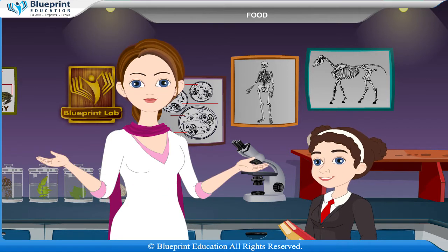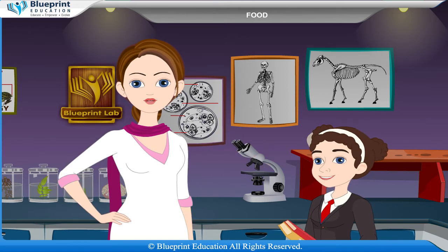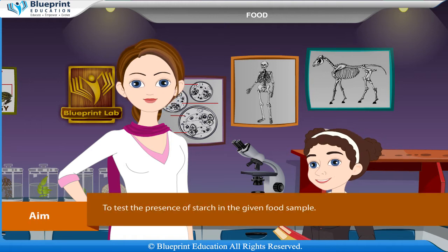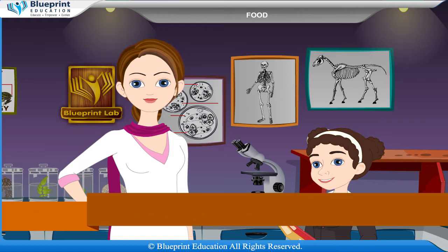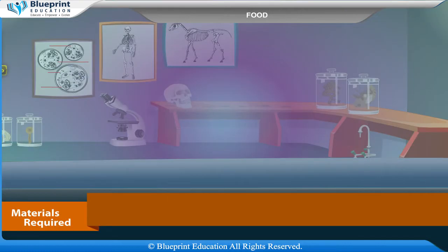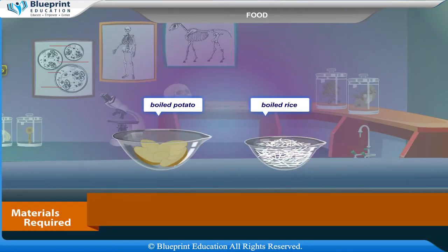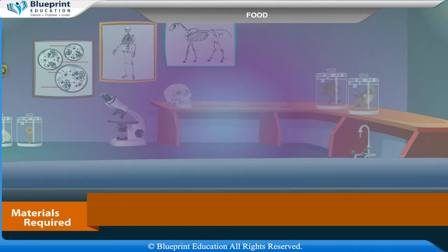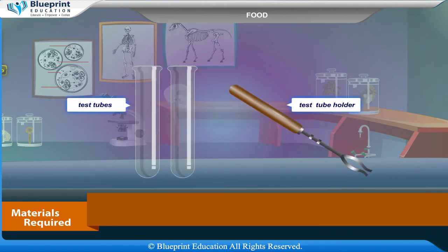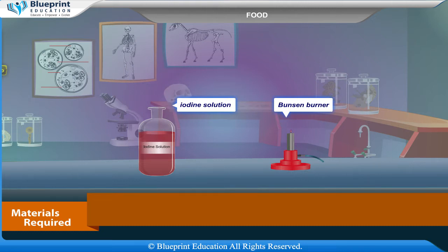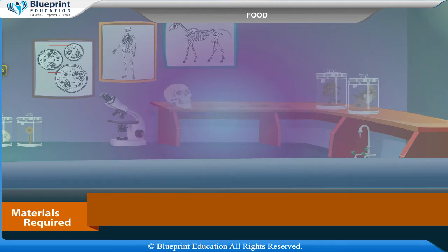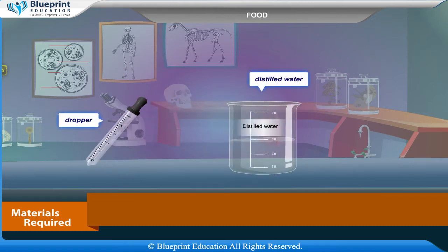Let's do an experiment to identify the presence of starch in food. Our aim here is to test for the presence of starch in a given food sample. Materials required are: boiled rice or boiled potato, test tubes, test tube holder, iodine solution, Bunsen burner, dropper, and distilled water.